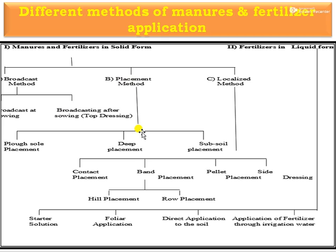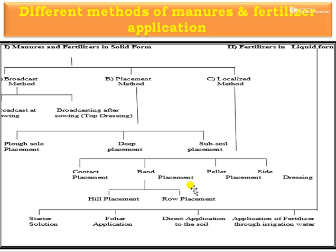In the placement method, it is again divided into different types: plow soil placement, deep placement, and subsoil placement. In deep placement, it is further divided into subtypes: contact placement, band placement, pellet placement, and side dressing. In band placement, it is again divided into two subtypes: hill placement and row placement. In localized placement, the types are contact, band, pellet, and side dressing.